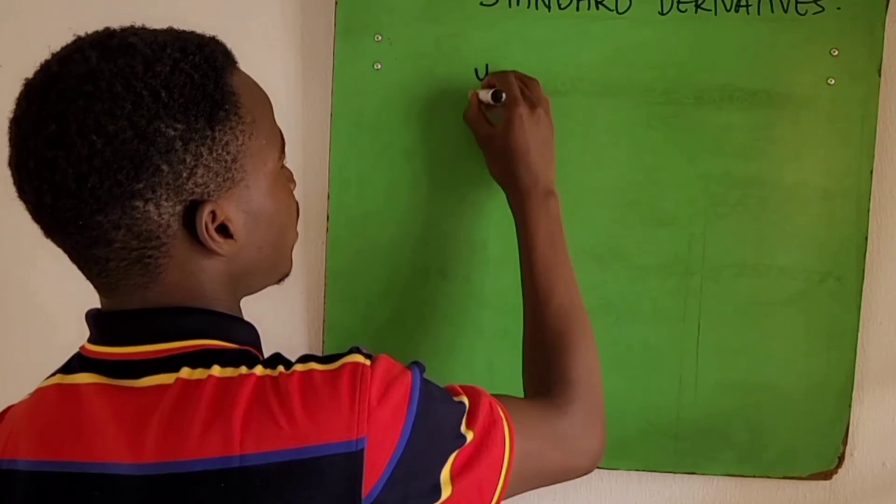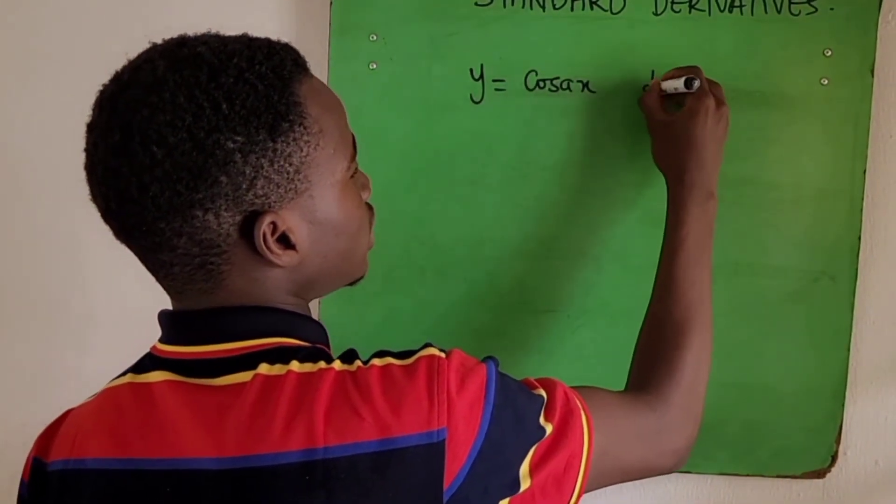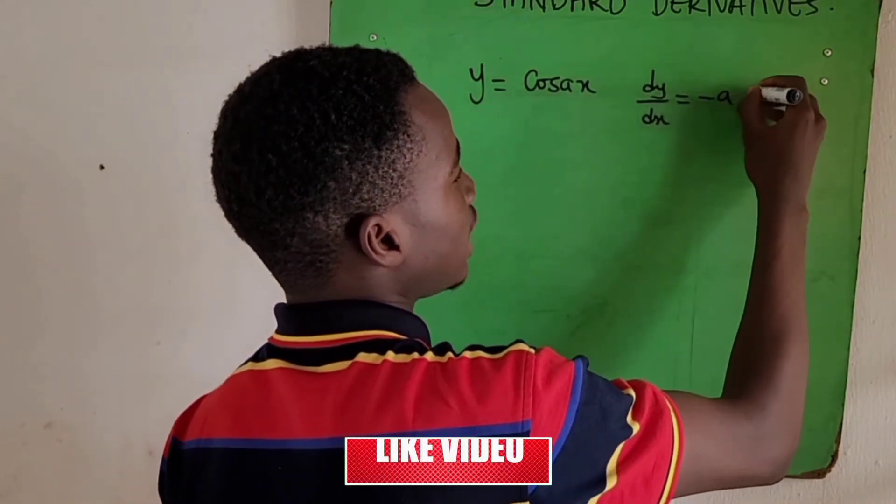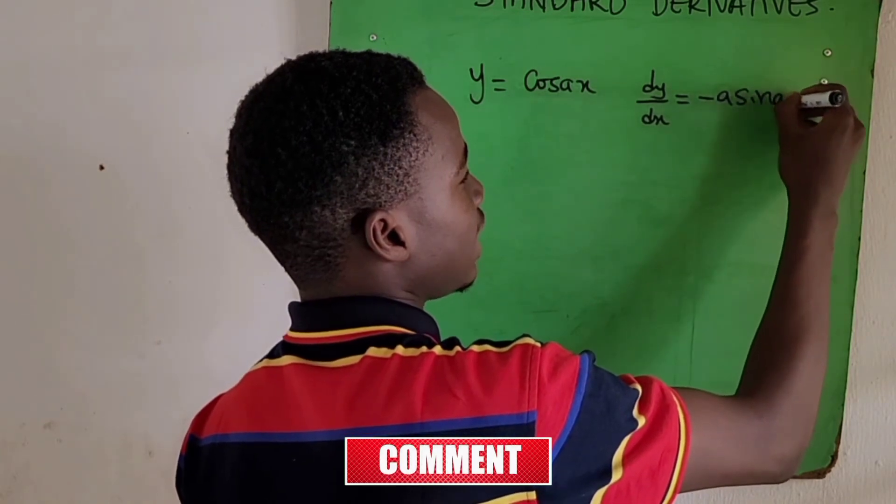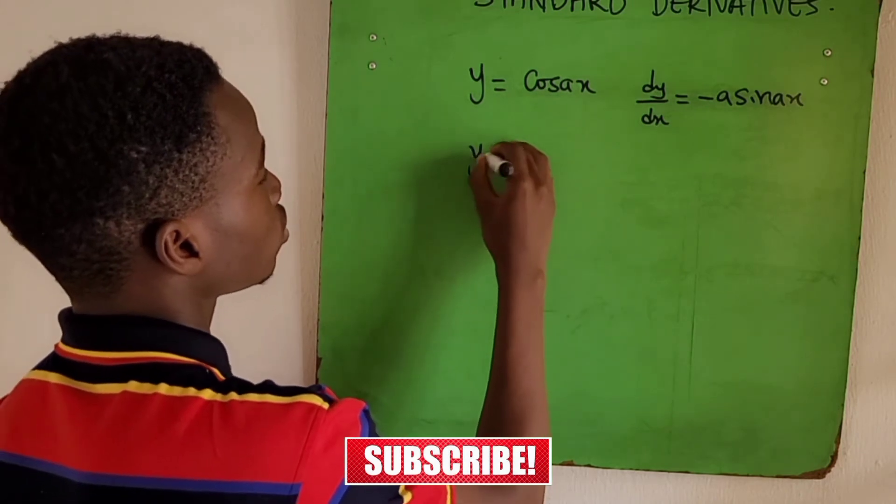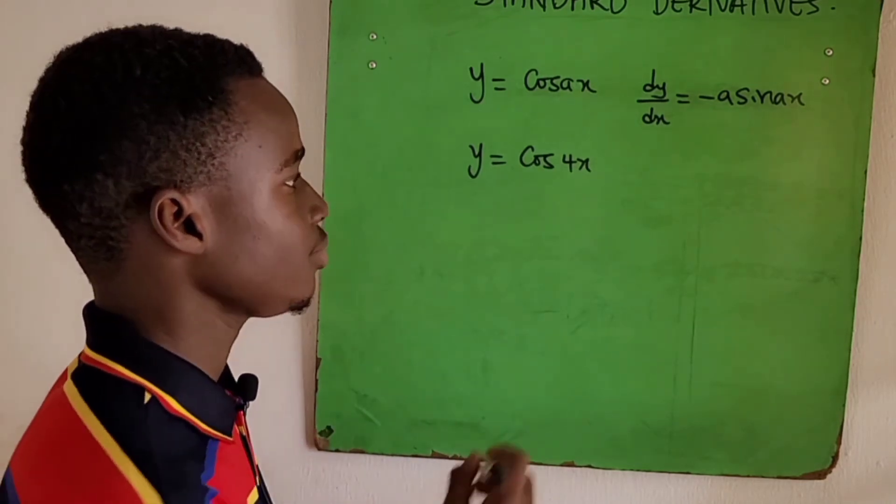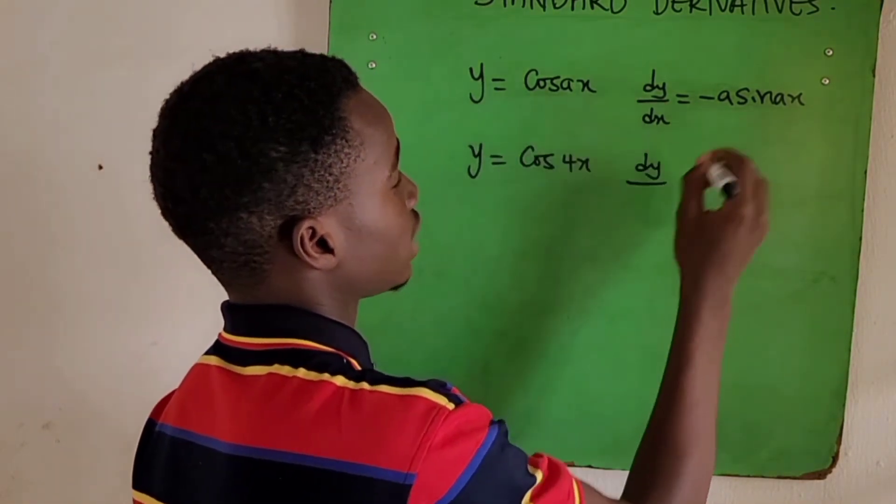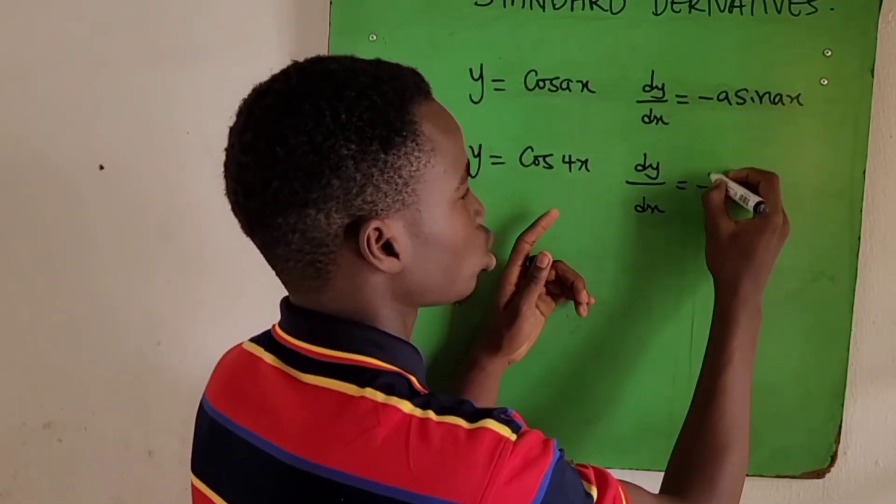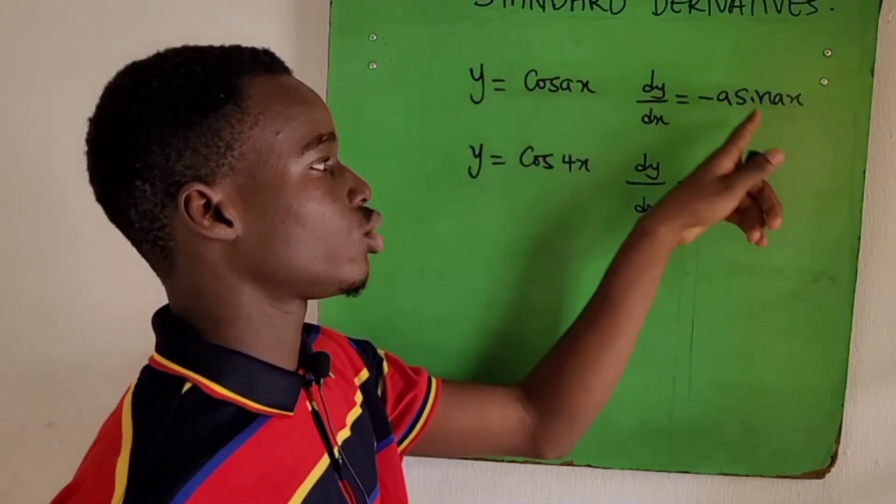The third derivative: if we have y = cos(ax), the standard derivative is dy/dx = -a·sin(ax). Let's look at a question. If you have y = cos(4x) and we have to find the standard derivative, it becomes minus a. What's our a? 4. Now it changes from cos to sine: minus 4·sin(4x). So it's as simple as that.